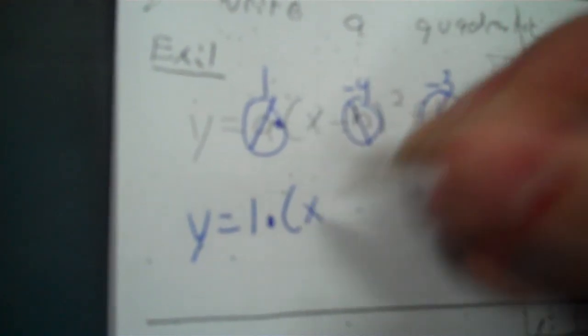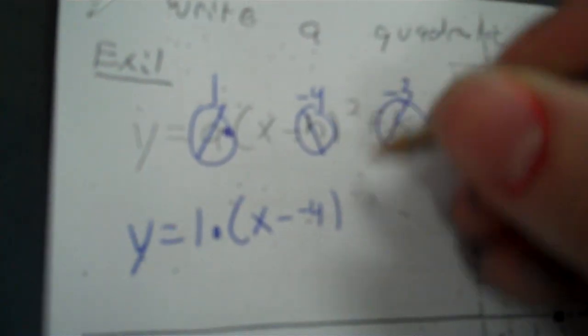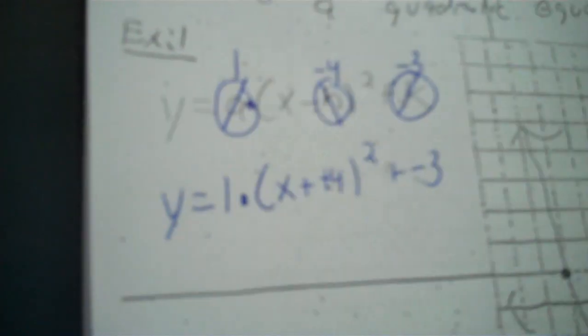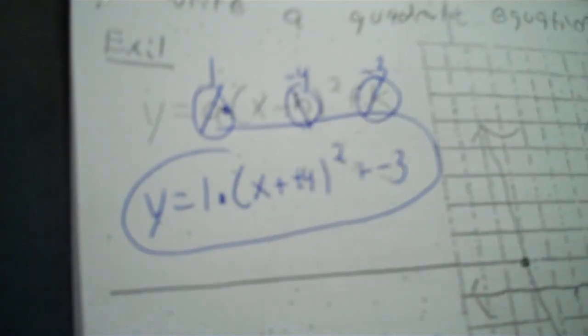Now you solve for a. Circle the a times 4, and take out the negative 3 by adding 3. Usually it's 4 times a, but multiplication order doesn't really matter. So 4 equals a times 4 — get rid of multiplication by dividing. What times 4 equals 4? It's 1. So 1 equals a. Now write your answer: y equals 1 times the quantity x minus negative 4 to the second power plus negative 3. If you have x minus negative 4, switch it over to x plus 4, because it's actually x plus 4.